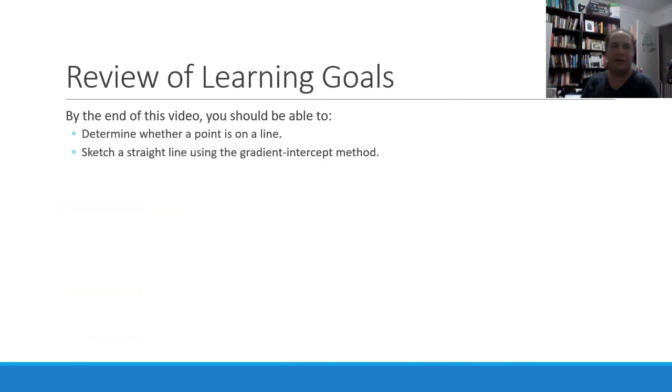All right. So just to review our learning goals students, you should be able to determine whether a point is on a line by substituting the point in and seeing if the equation is true or false. And then also sketch a straight line using the gradient intercept method.